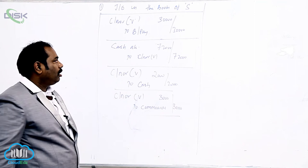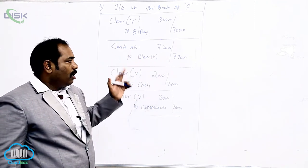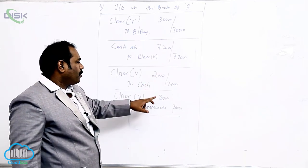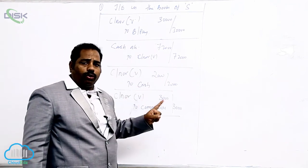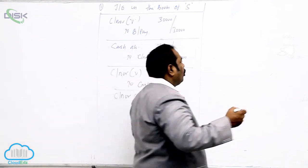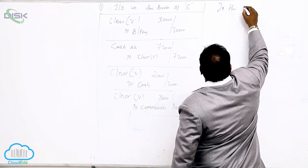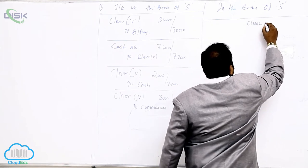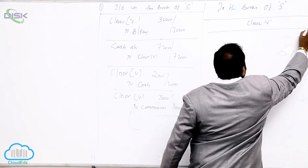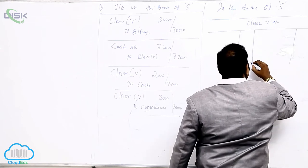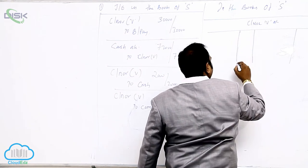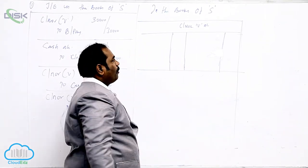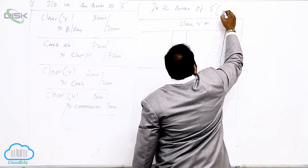Now for the settlement: after selling the goods we have to pay the balance amount to the consignor. After adjusting expenses, commission, and the advance, the consignee pays the balance to the consignor. To find the balance we need to open a ledger account. In the books of S we open the Consignor's Account — that is, V's account.